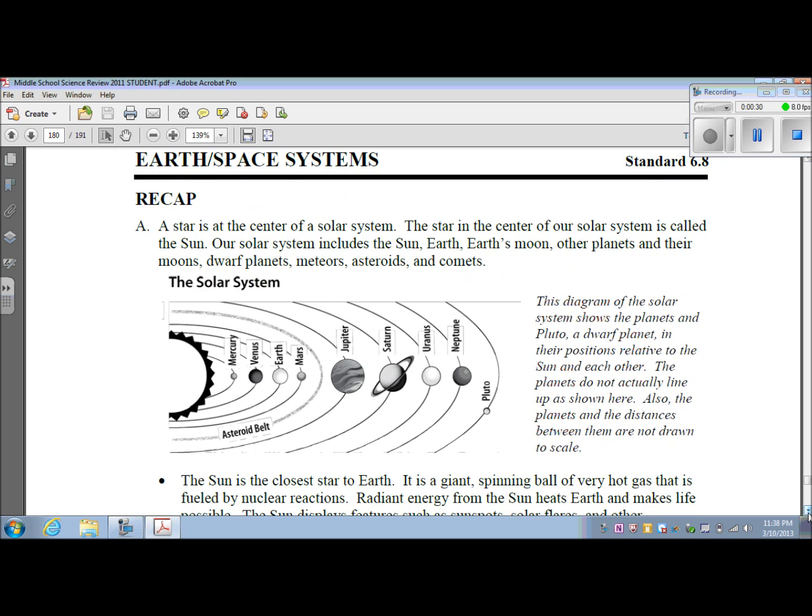This diagram of the solar system shows the planets and Pluto, a dwarf planet, in their positions relative to the Sun and each other. The planets do not actually line up as shown here. Also, the planets and the distance between them are not drawn to scale.